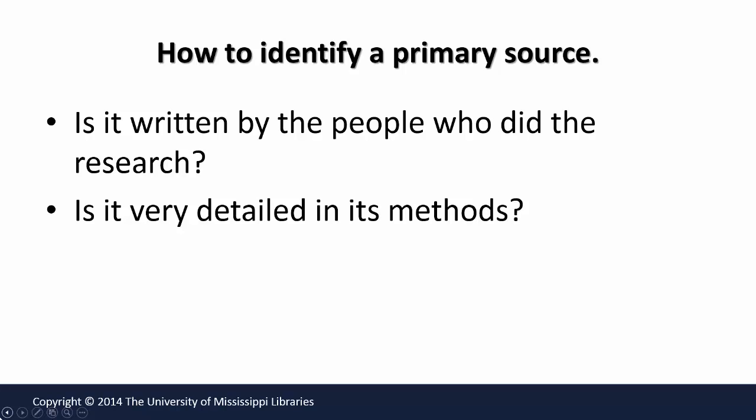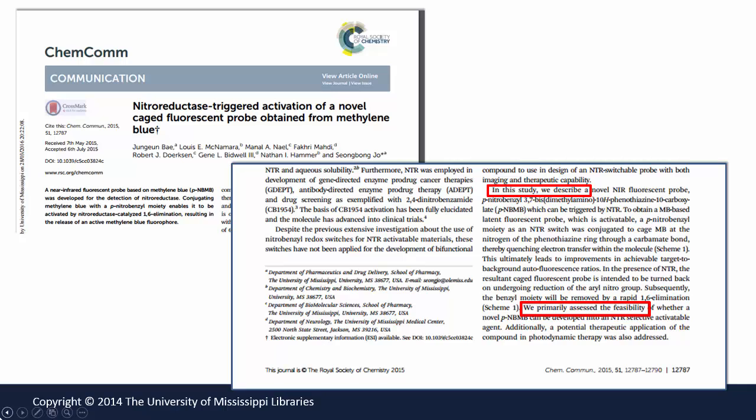If you are just learning how to identify and read scientific articles, there are some visual cues you can use to help you confirm that an article is a primary source. For example, did the authors write about their own work? Do they describe the methods they used in exacting detail? Let's look at an example.